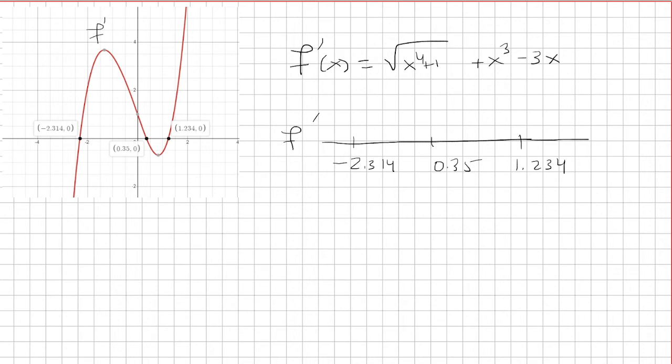Now we're going to test the different regions. So let's first pick a value to the left of negative 2.34, which will be down here. And as you can see, f prime is going to be negative there. Between negative 2.314 and 0.35, we're above the y-axis, so that's going to be positive.